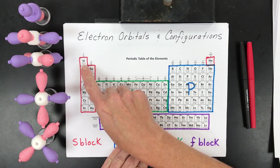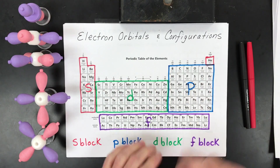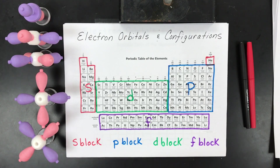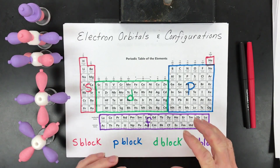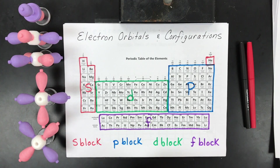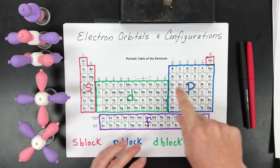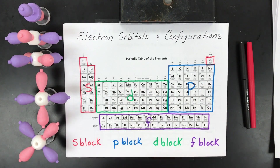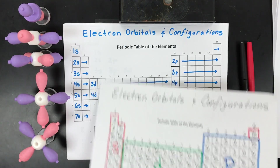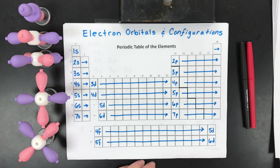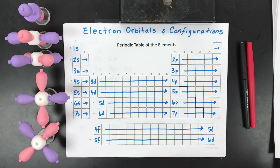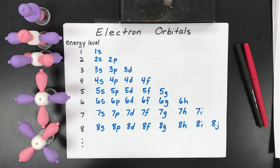Instead of just going from elements 1 through 10 like in my previous video, I'm going to go over how to do a configuration for an element, an orbital diagram, or the valence and Lewis dot symbol for an element anywhere on the periodic table. This is an image you may have in your textbook that you may or may not understand how to use, but hopefully after this video it'll make more sense.